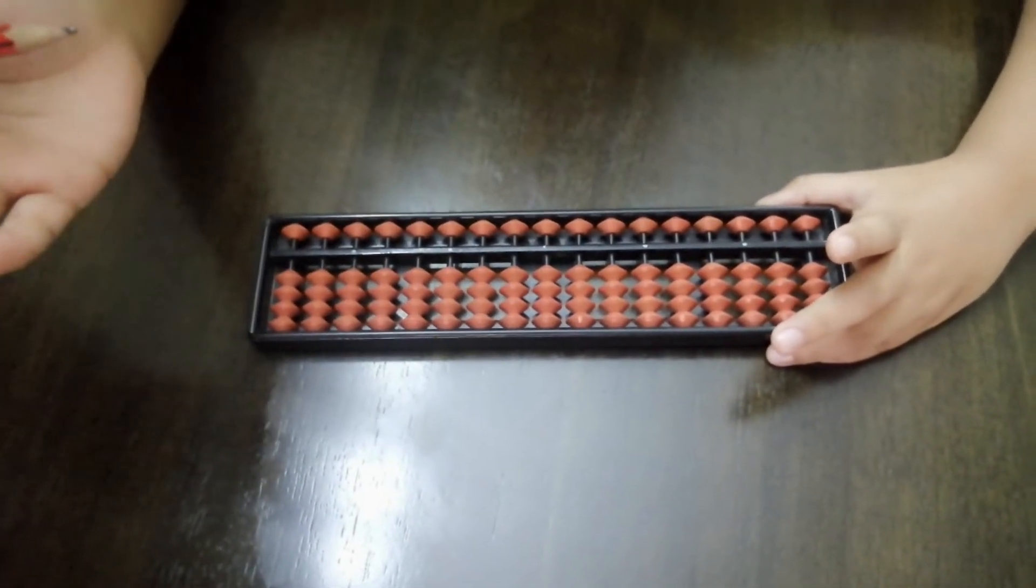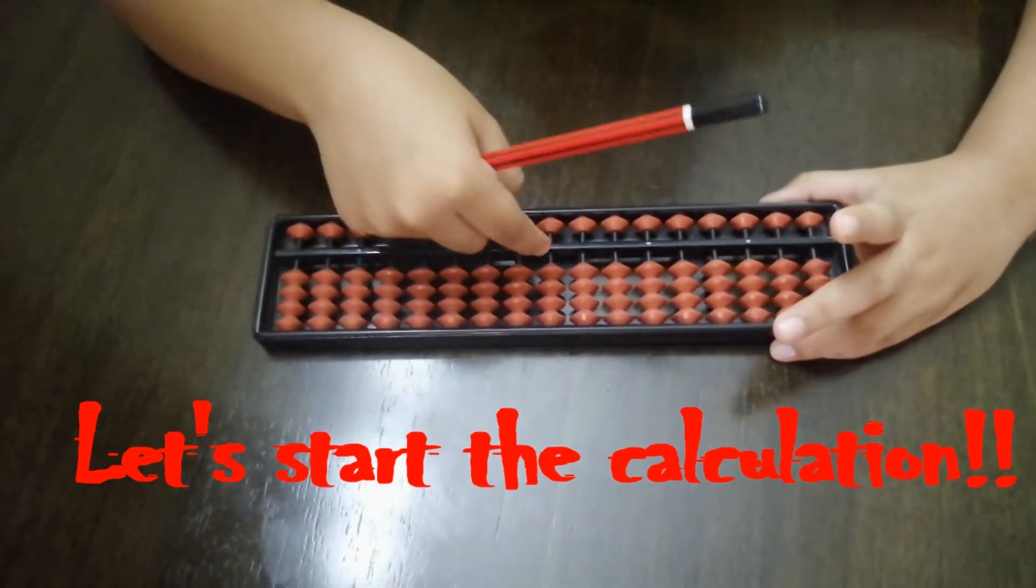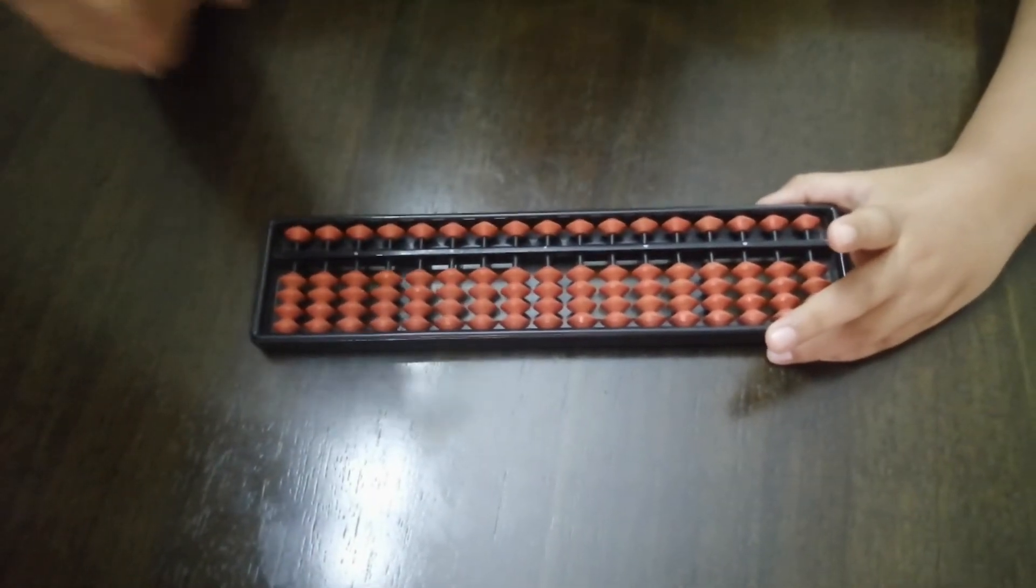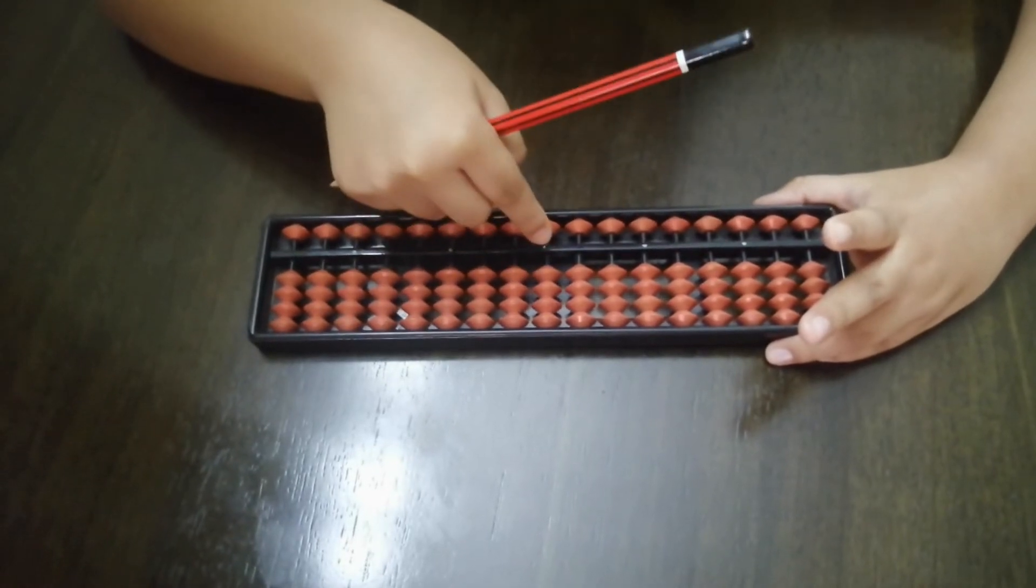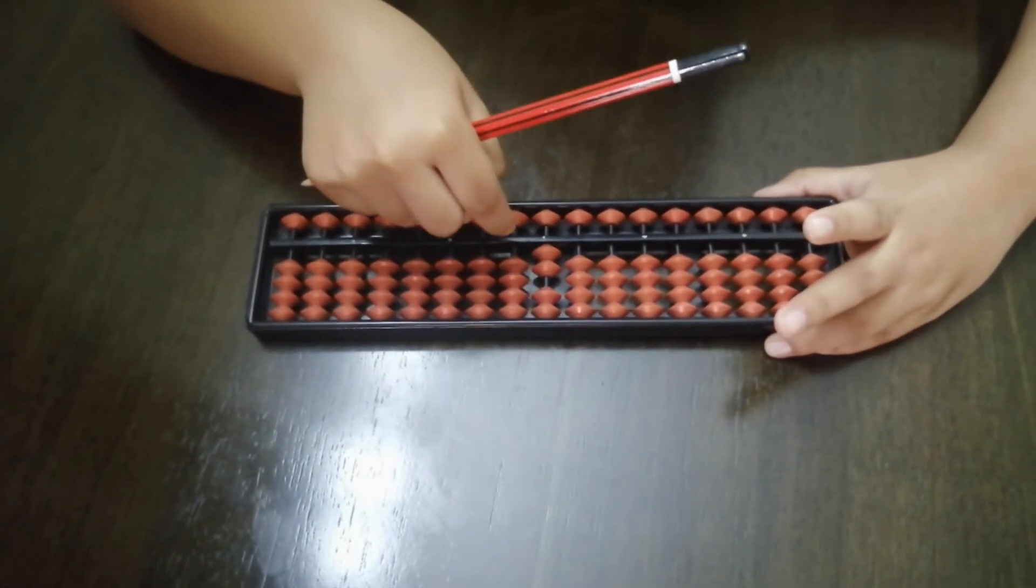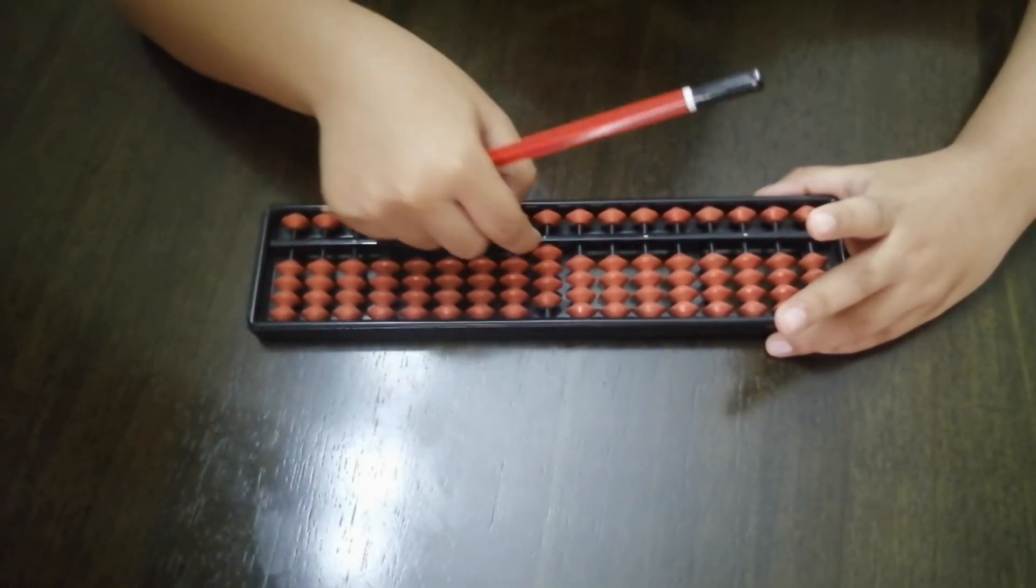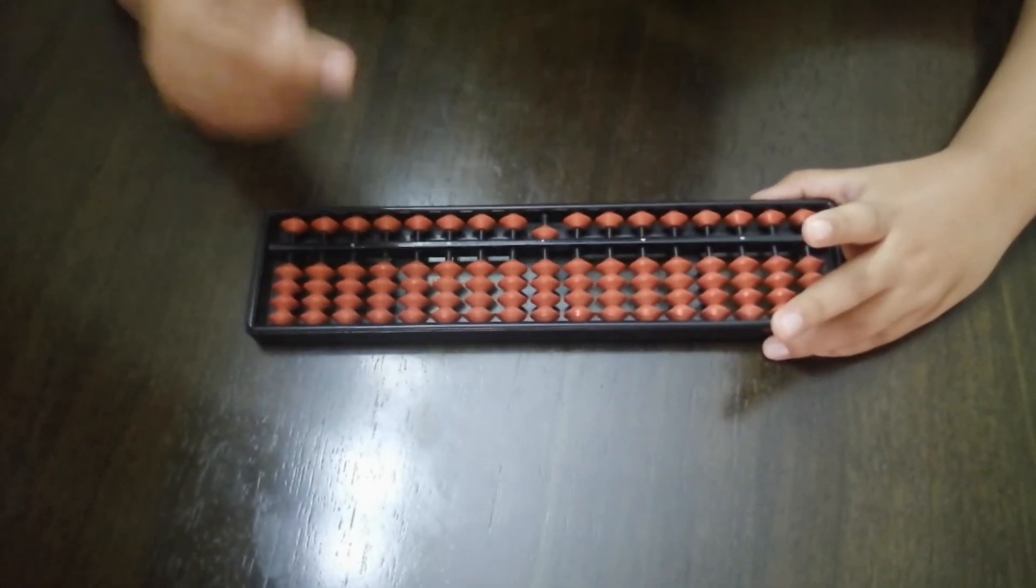Now, let's start counting from 1 to 10 on the Abacus. This is 1. You should be in the 1's place. 1, 2, 3, 4. This is 5, because the upper beads are 5.